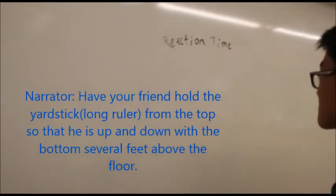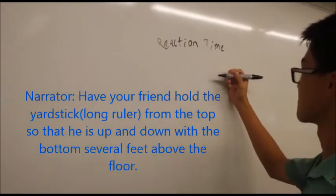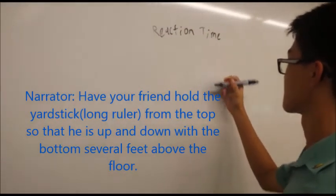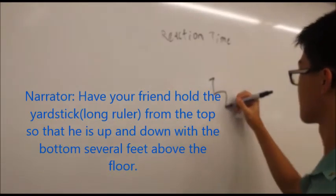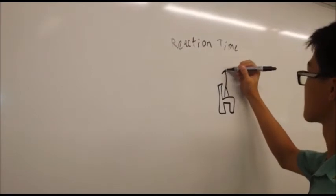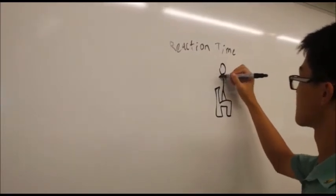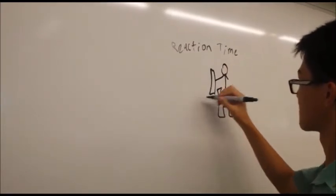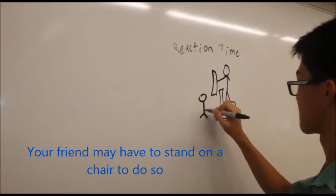Have a friend hold a yardstick from the top so that it is up and down with the bottom several feet above the floor. Your friend probably has to stand on a chair to do so.